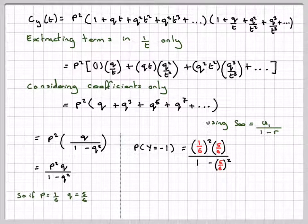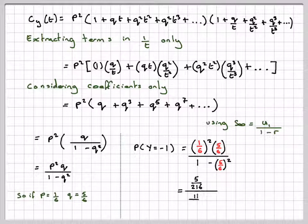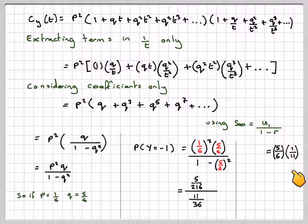We extracted the coefficient of t^{-1} because in a probability generating function, the coefficient of t^y gives P(Y = y), so for Y = -1 we need the t^{-1} term. Working that out: (1/36) · (5/6) / (11/36) = (5/216) / (11/36) = (5/6) · (1/11) = 5/66.